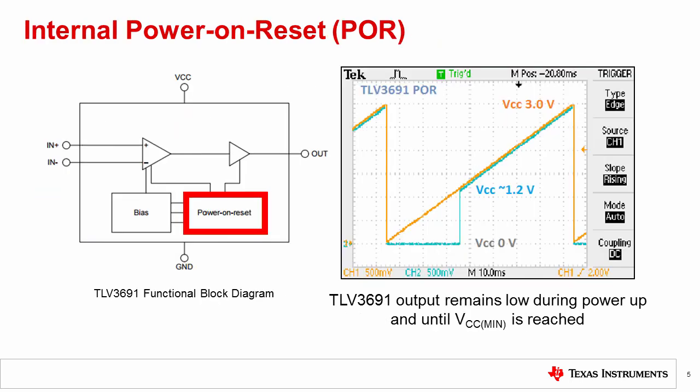Thankfully, some more modern comparators have internal circuitry which addresses this issue. The TLV3691, for example, has a power on reset, or POR, circuit which forces the comparator output low during startup.